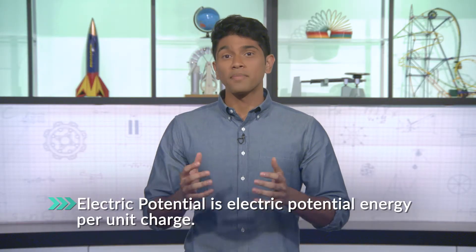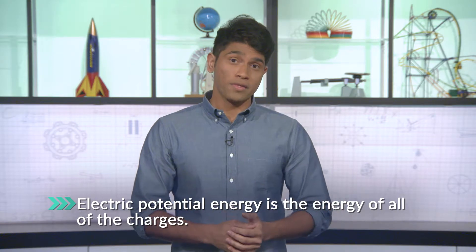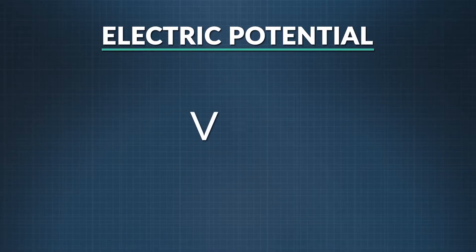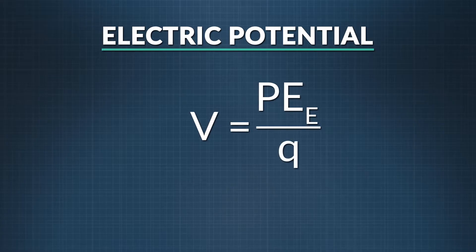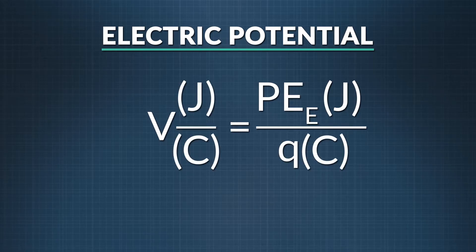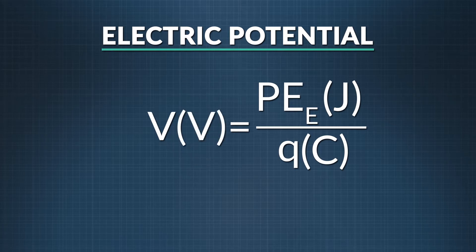We've seen what electric potential energy is and that it equals the work a charge in a field can do. But how can we talk about it in a way that makes it useful? One way is per unit charge, which we call electric potential. Be careful not to confuse the two — when we have a system with many charges, electric potential energy tells us the energy of all the charges, while electric potential tells us the energy of a single unit of charge. Electric potential, represented by V, is the electric potential energy per unit charge. A volt is defined as a joule per coulomb, so when we calculate electric potential, we can simplify the units to volts. Electric potential is also called voltage.